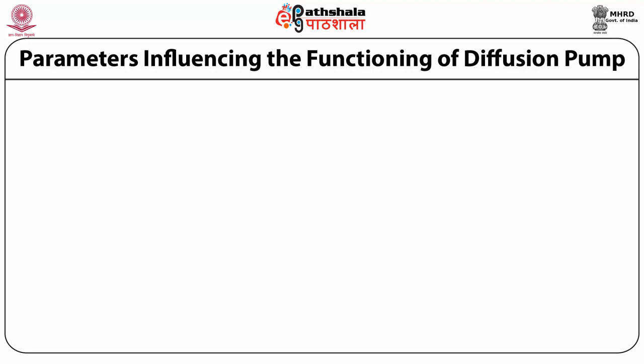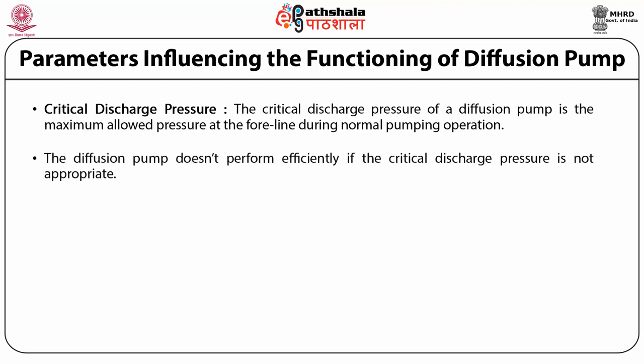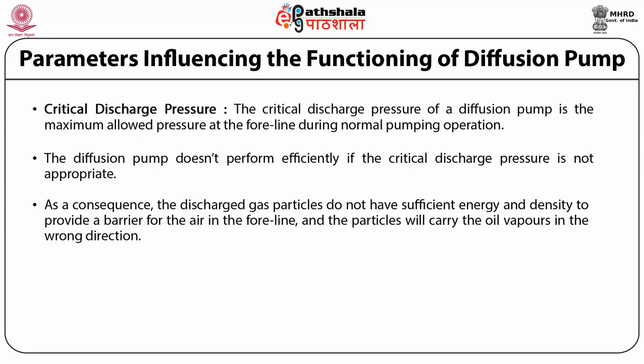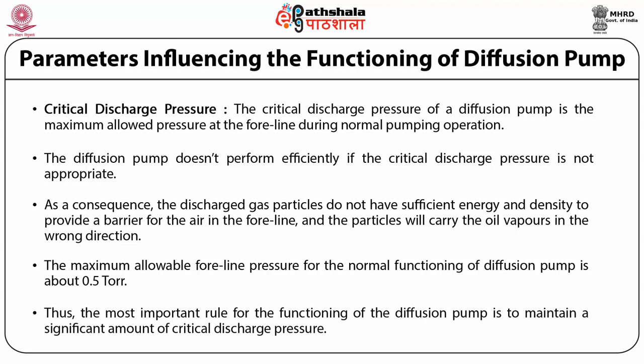The second parameter influencing the functioning of diffusion pump is critical discharge pressure. The critical discharge pressure of a diffusion pump is the maximum allowed pressure at the foreline during normal pumping operation. The diffusion pump doesn't perform efficiently if a critical discharge pressure is not appropriate. As a consequence, the discharged gas particles do not have sufficient energy and density to provide a barrier for the air in the foreline, and the particles will carry the oil vapors in the wrong direction. The maximum allowable foreline pressure for the normal functioning of the diffusion pump is about 0.5 Torr. Thus the most important rule for the functioning of the diffusion pump is to maintain a significant amount of critical discharge pressure.